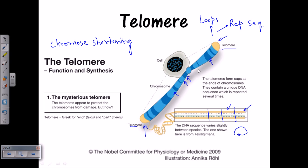Looking at the chromosome, the dark blue sections and light color sections are both present. The light color sections represent the coding regions — all the necessary sequences which code for proteins. The telomere has no coding sequence, as it is only responsible for protecting the rest of the coding and non-coding sequences of the chromosome. Even if some telomeric DNA is lost from the end, it won't reach any coding region.